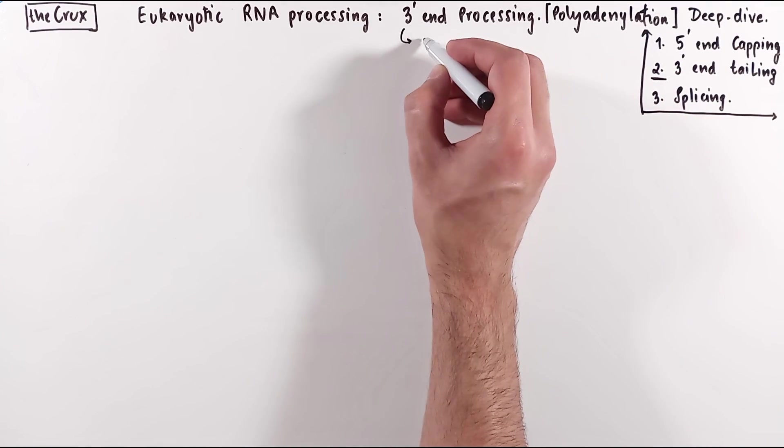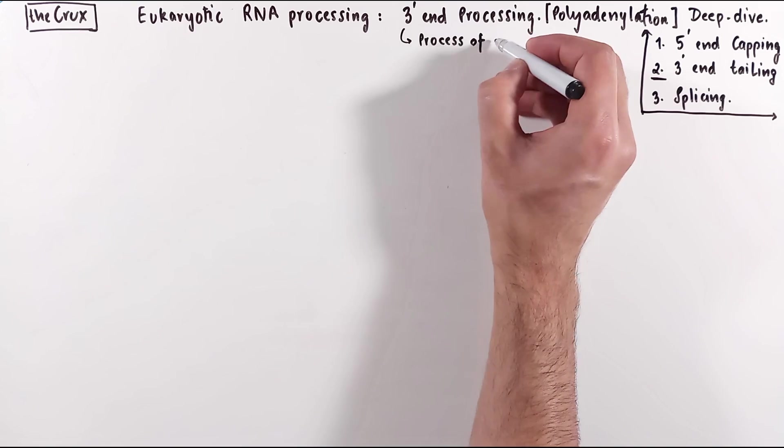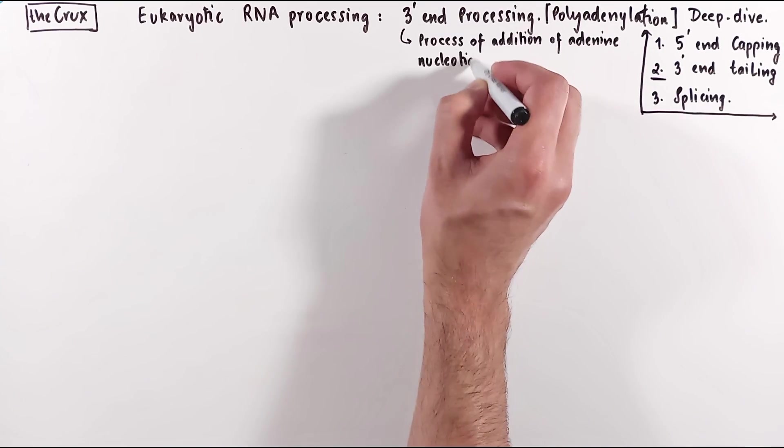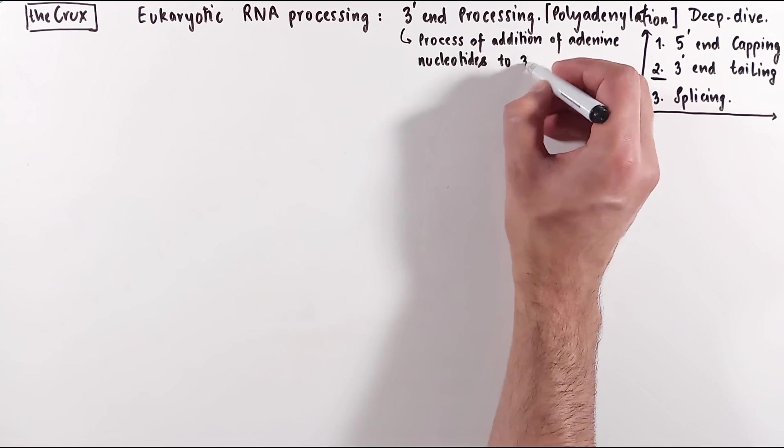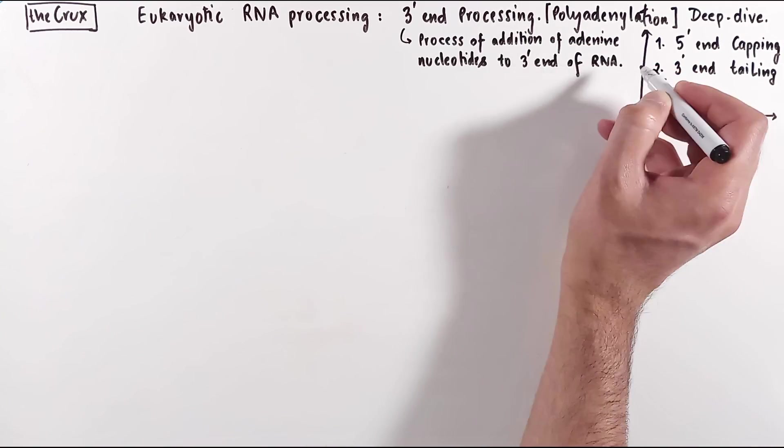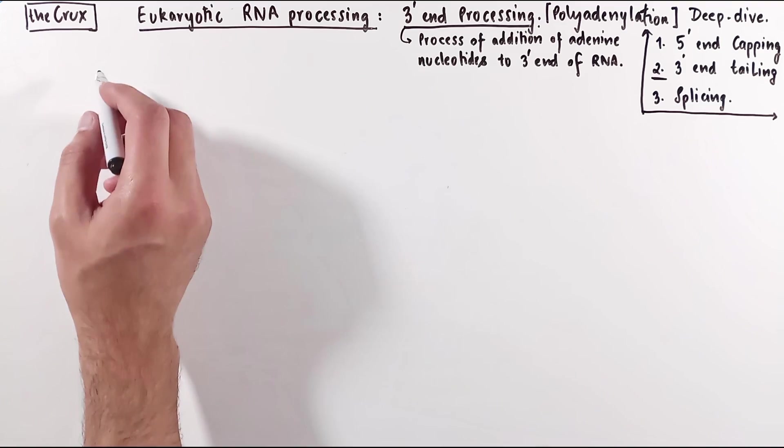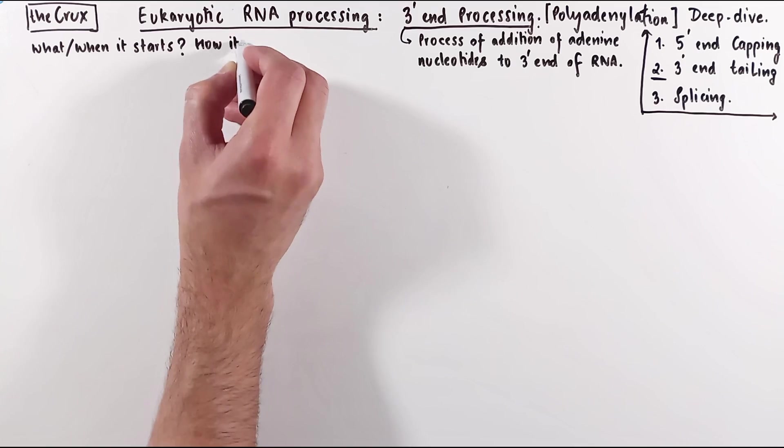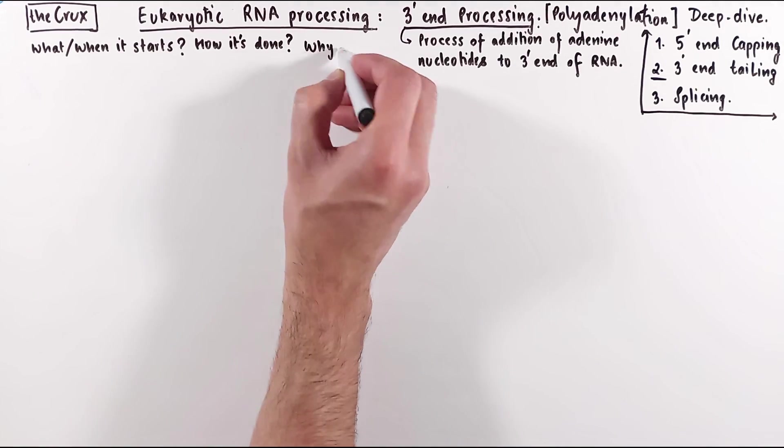Just for the sake of definition, the 3' end processing of RNA is the process of adding adenine nucleotides to the 3' end of the RNA during or after transcription termination. As we have done before, we will see when and what starts this process, how it is done, and why this 3' end tailing is important.